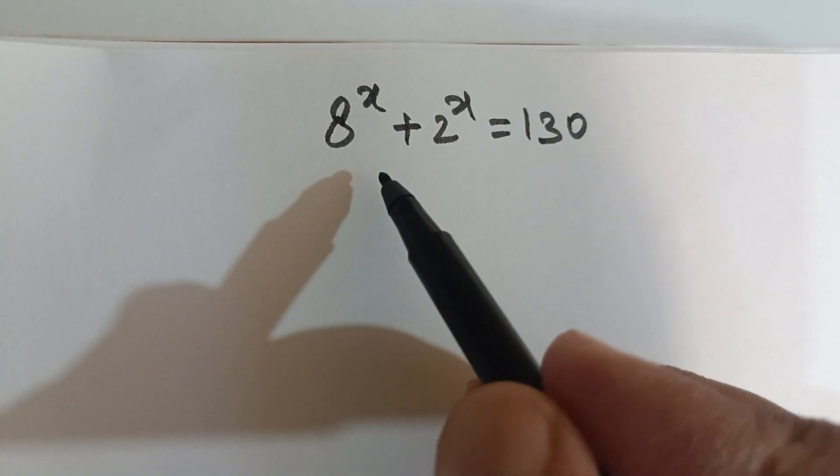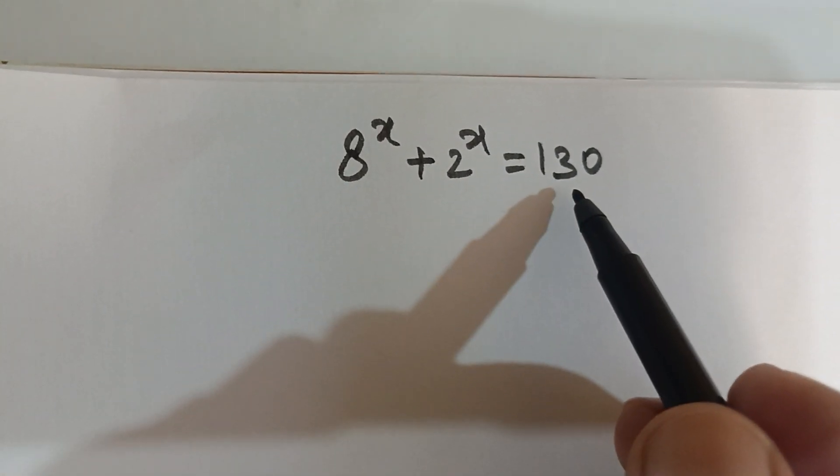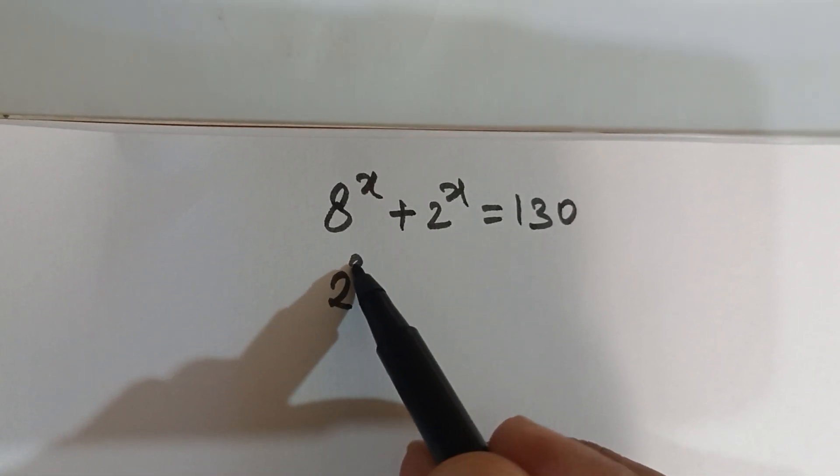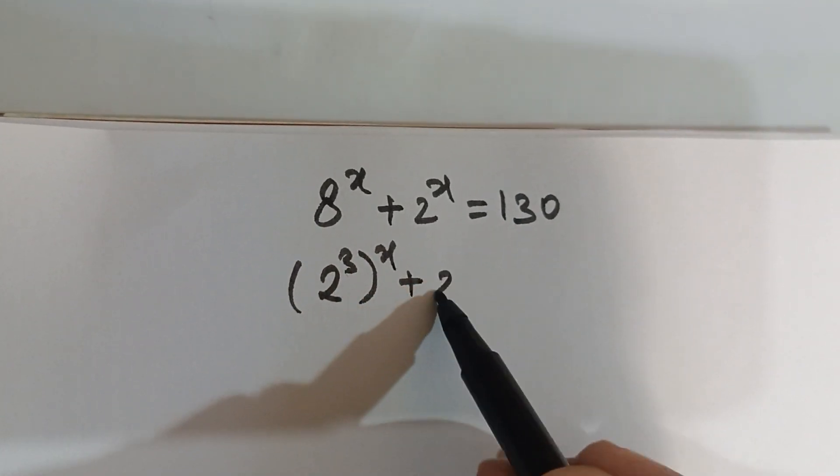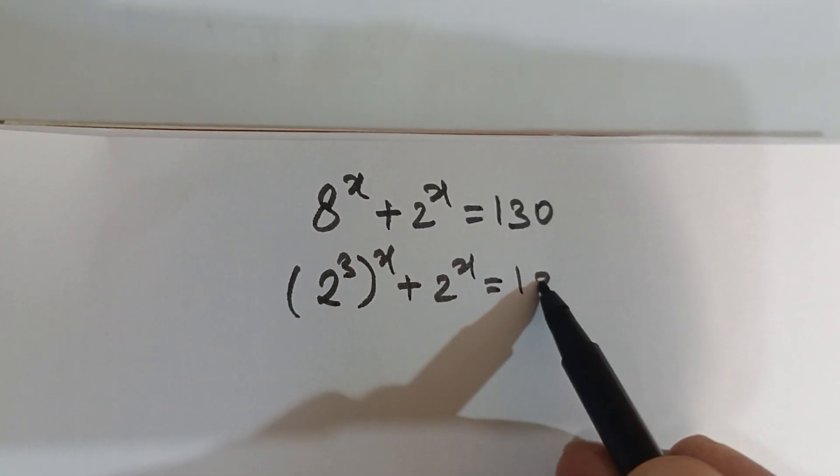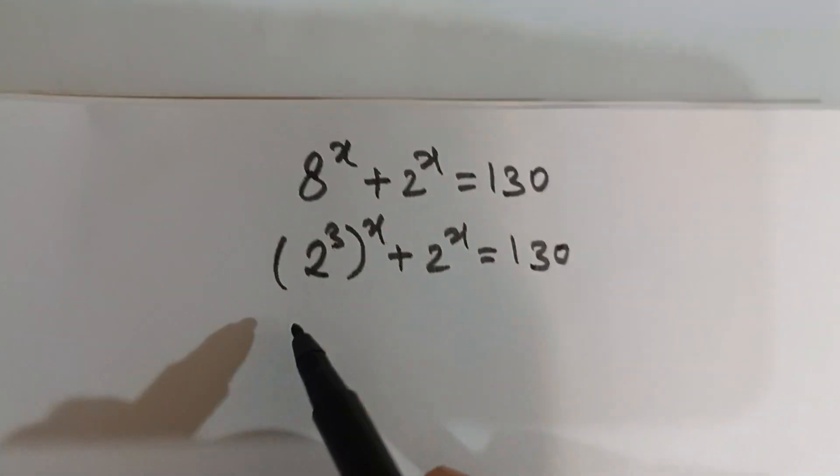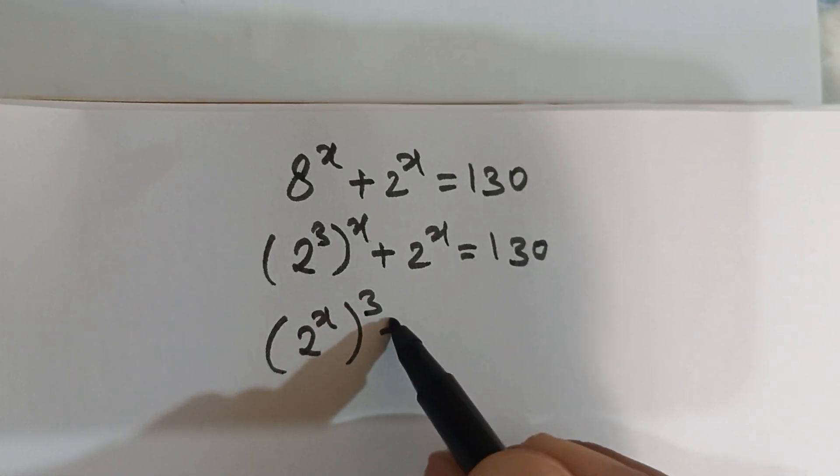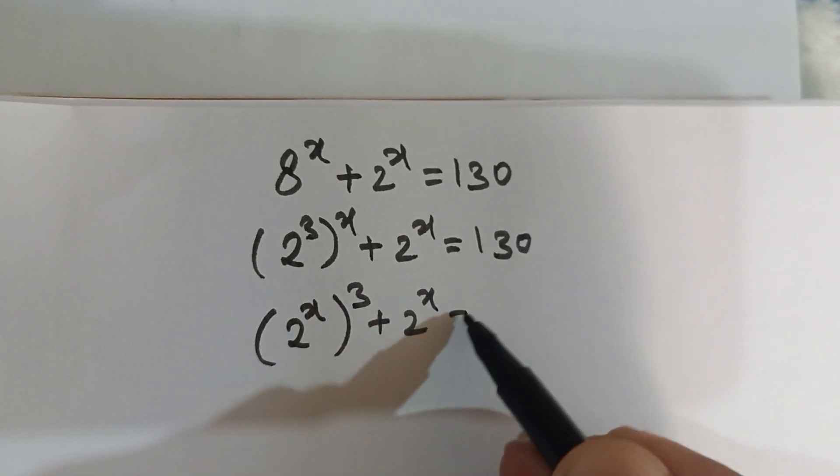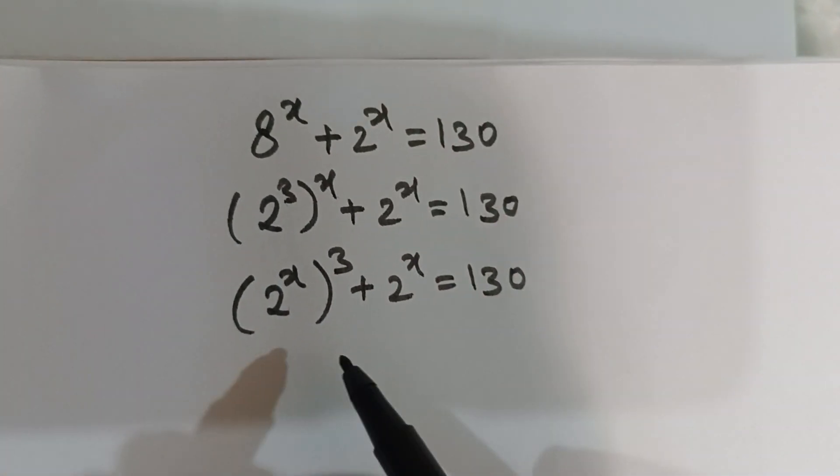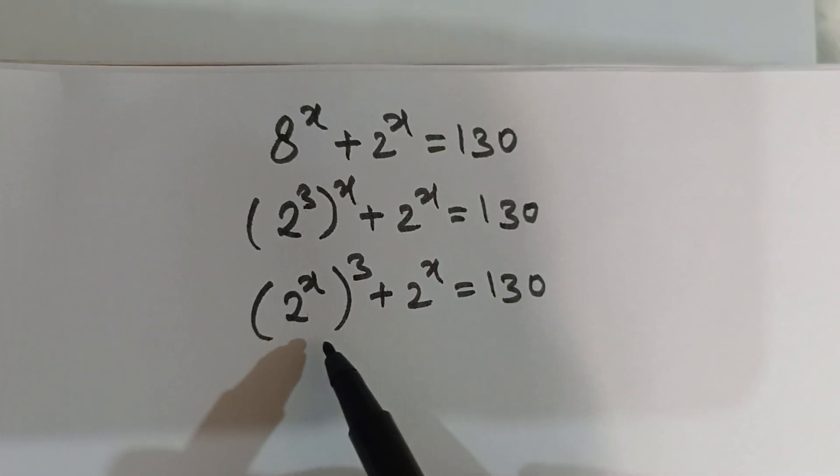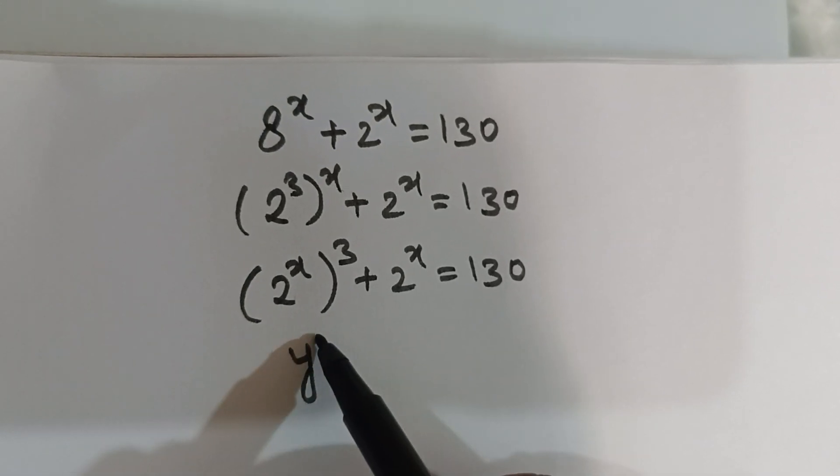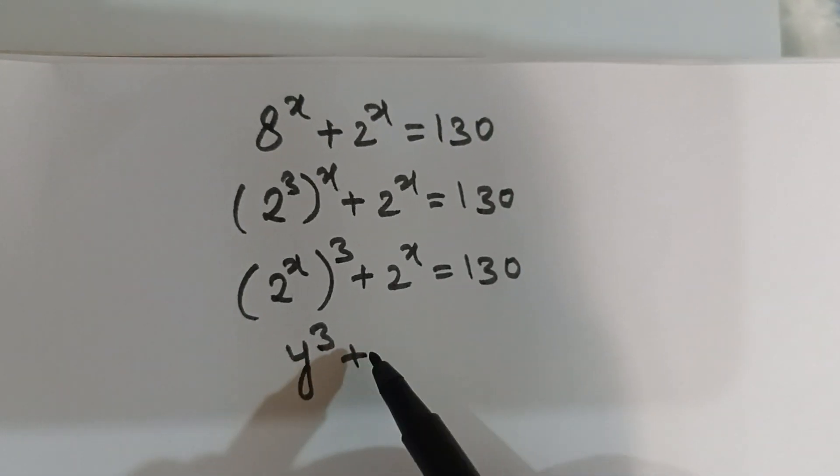Hello friends, let's solve this Math Olympiad problem. I can write 8^x as 2 raised to the power 3x. This can be written as (2^3)^x + 2^x = 130. If I put y for 2^x, I get an equation in y.